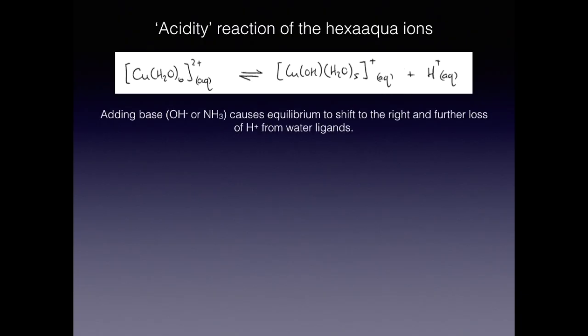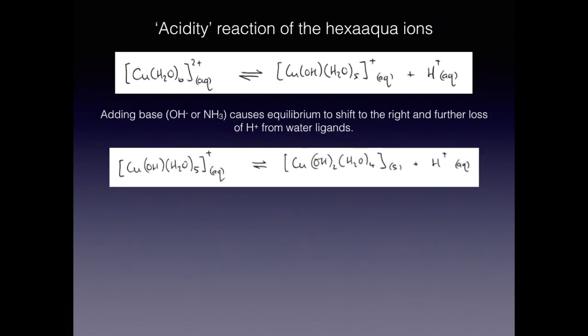However if we add any base to this, so hydroxide ions or ammonia, we remove those H+ ions on the right and so the equilibrium shifts further over to the right and causes the loss of another proton. That would set up this next equilibrium. Now because this is neutral it can't dissolve in the water anymore and so we actually see a solid precipitate.